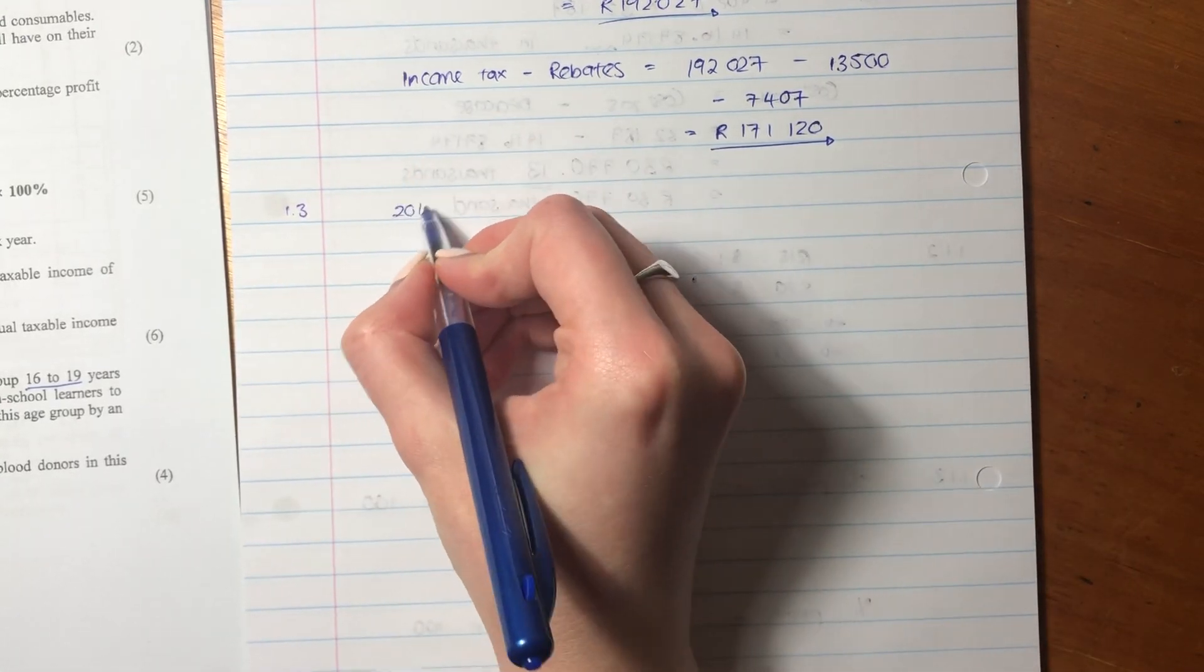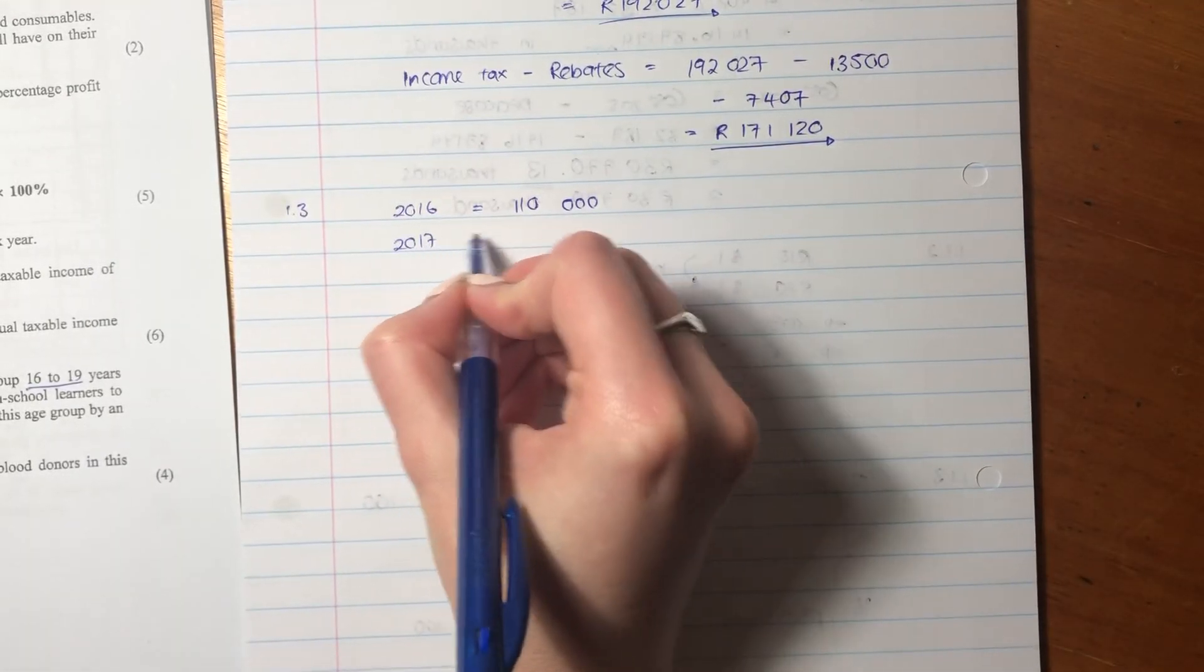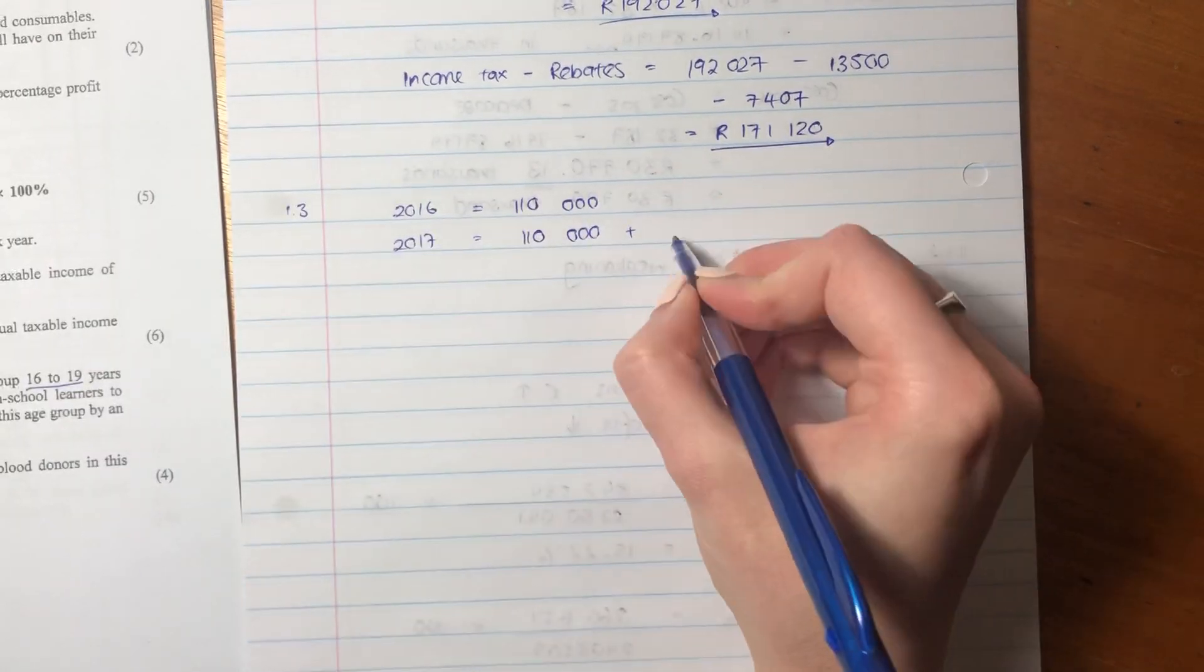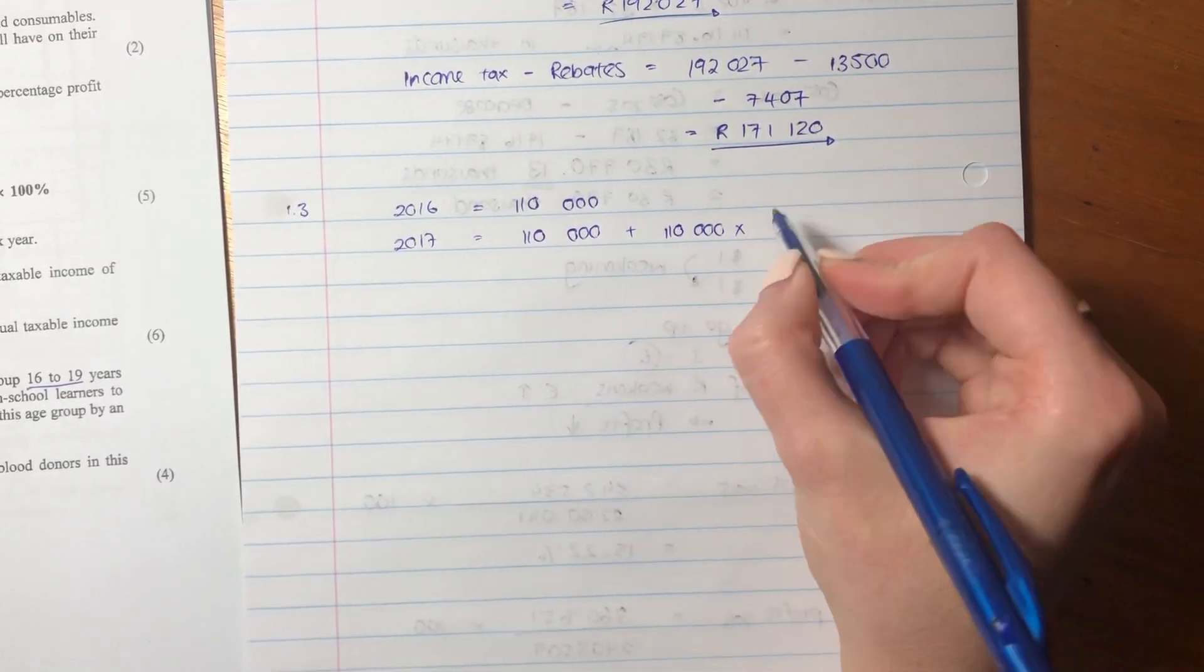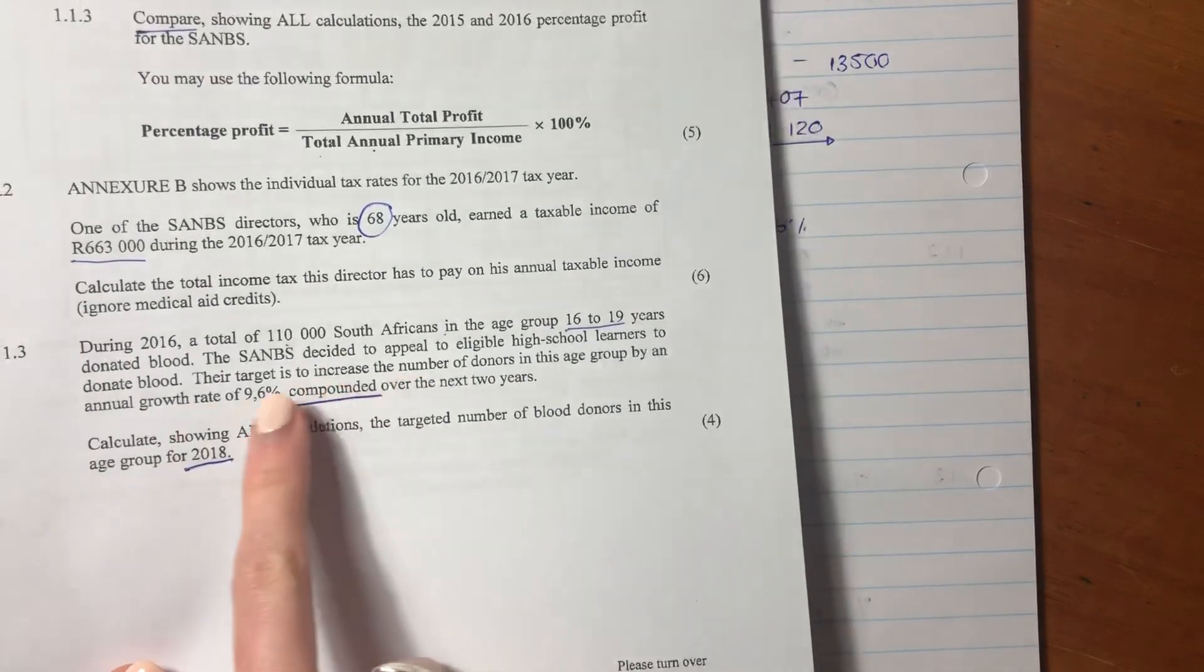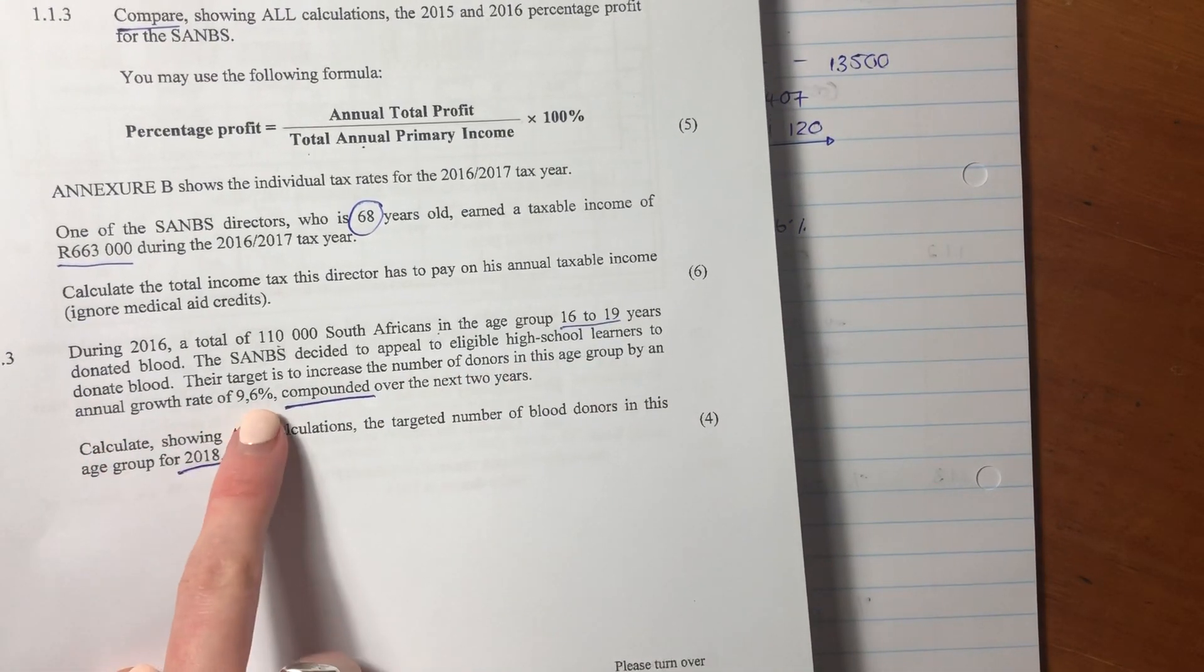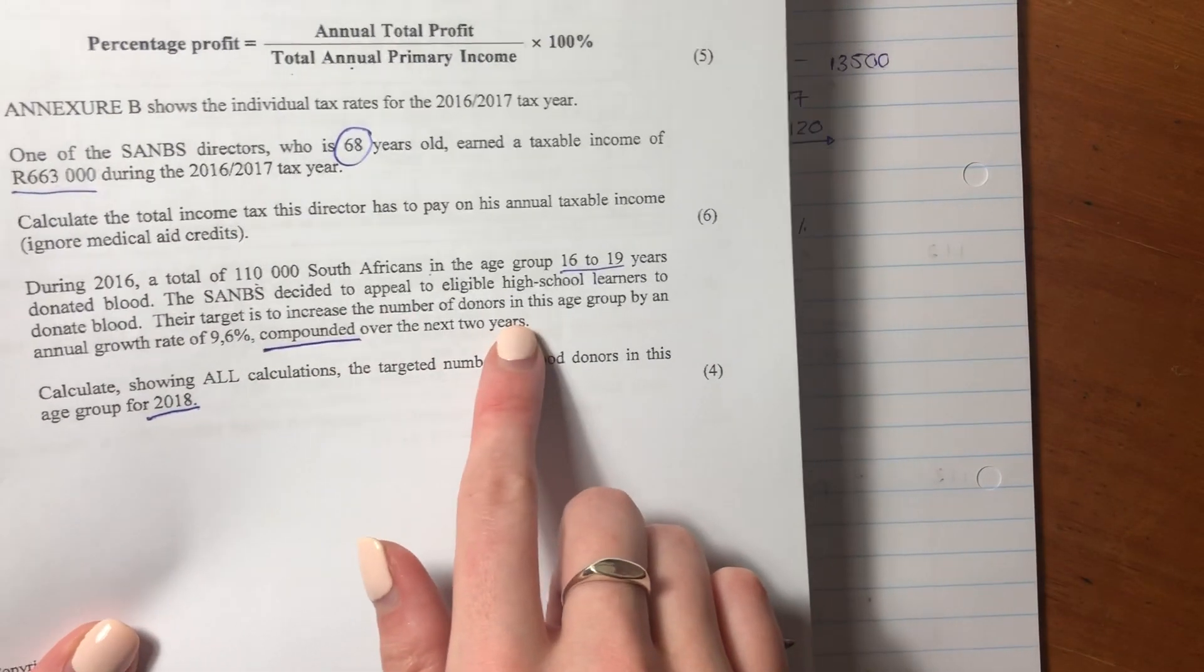So in 2016, we had 110,000, okay? In 2017, we want that amount, but then we also want that amount times by 9.6%, okay? You see that, because they said the target has increased the number of donors in this age group by an annual growth rate of 9.6% compounded over the next two years.